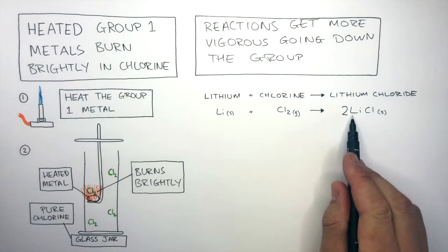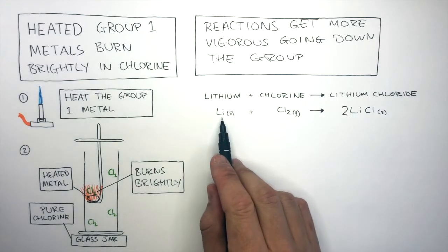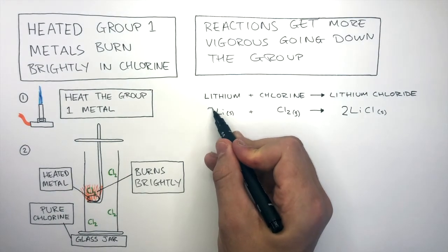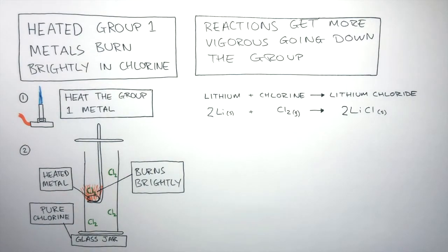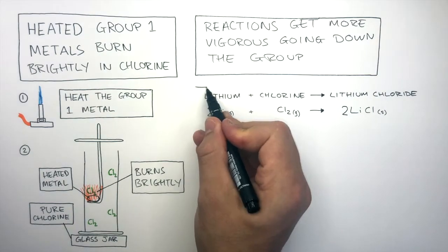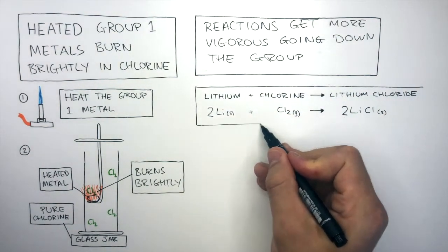There are now two lithium atoms on the right, and we can see there is one lithium atom on the left. Therefore, we put a big 2 in front of the Li, so there are now two lithiums on both sides. This chemical reaction is now balanced.